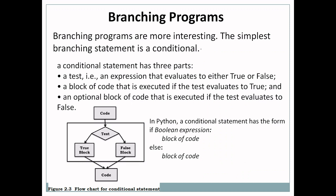Branching programs are more interesting than straight-line programs. Straight-line programs execute from top to bottom, from the first statement to the last. In branching programs, statements are not executed top to bottom — they are executed based on certain conditions. If a condition is true, one part of the program is executed; if false, the other part is executed.